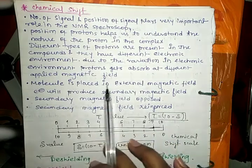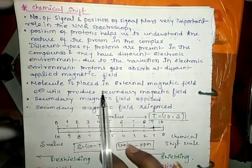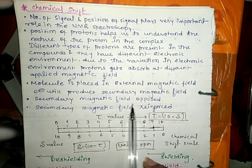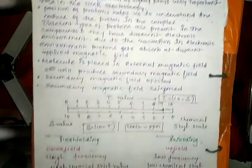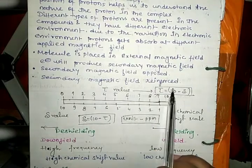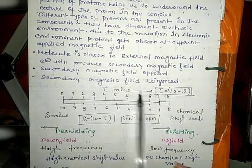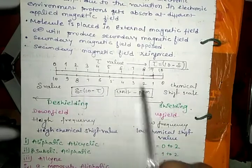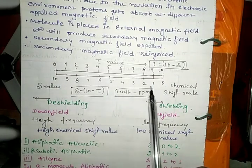Due to the variation in electronic environment, protons get absorbed at different applied magnetic field. When molecule is placed in external magnetic field, electrons will produce secondary magnetic field. Secondary magnetic field opposed and secondary magnetic field reinforced.